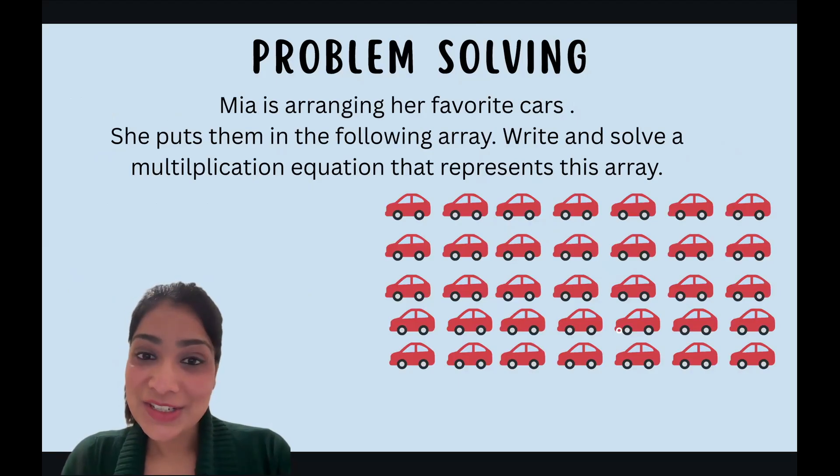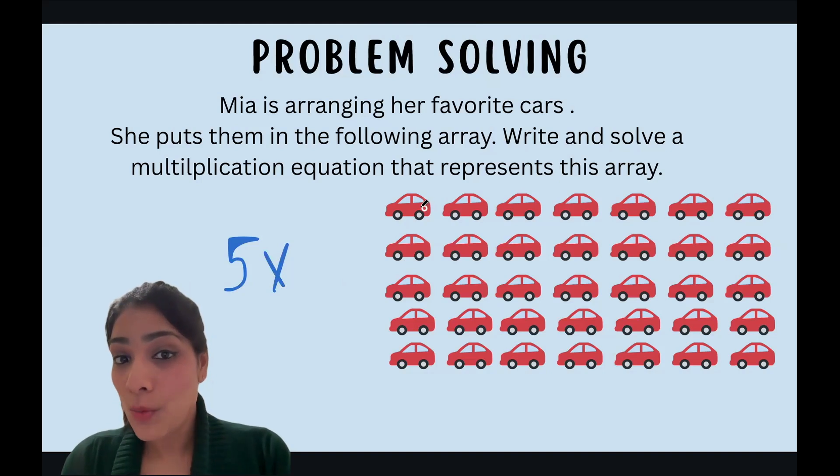Okay, well, let's continue. Let's count how many rows are there: one, two, three, four, five. So write down five times. And in one row, how many cars are there? One, two, three, four, five, six, seven. So multiplication equation becomes five times seven. And how many total cars are there? Do you want to find that? Five times seven is equal to, let's do it using skip counting. So seven, 14, 21, 28, 35. So there are total 35 cars.